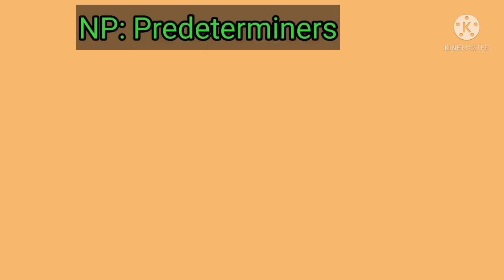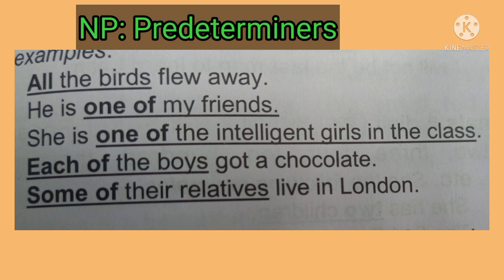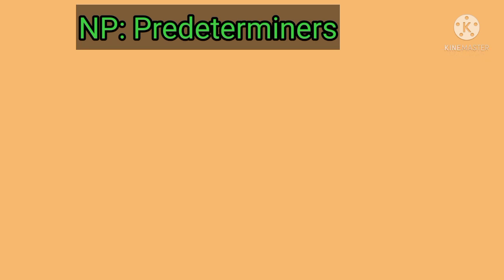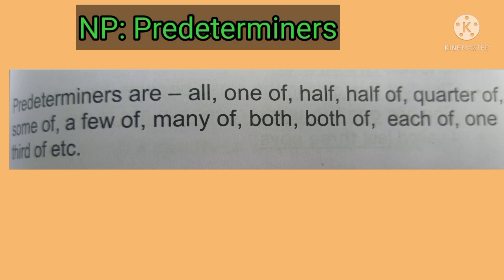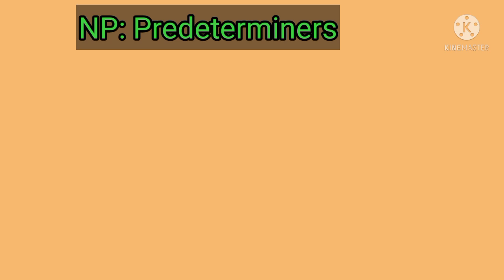Now let's understand pre-determiners. Pre-determiners are words that precede the determiners and generally tell us the quantity of the noun, but they specifically occur before a determiner. Examples: 'All the birds flew away,' 'He is one of my friends,' 'She is one of the intelligent girls in the class,' 'Each of the boys got a chocolate,' 'Some of their relatives live in London.' Pre-determiners include all, one of, half, half of, quarter of, some of, a few of, many of, both, both of, each of, one third of, and so on.